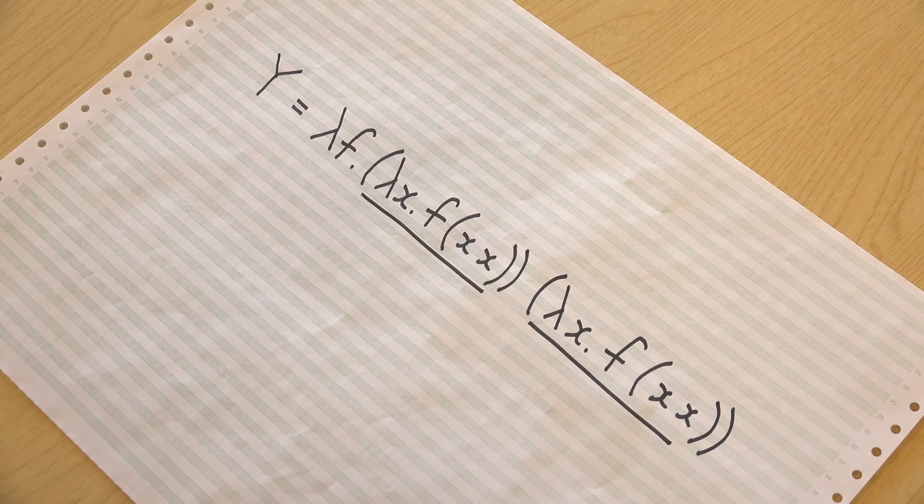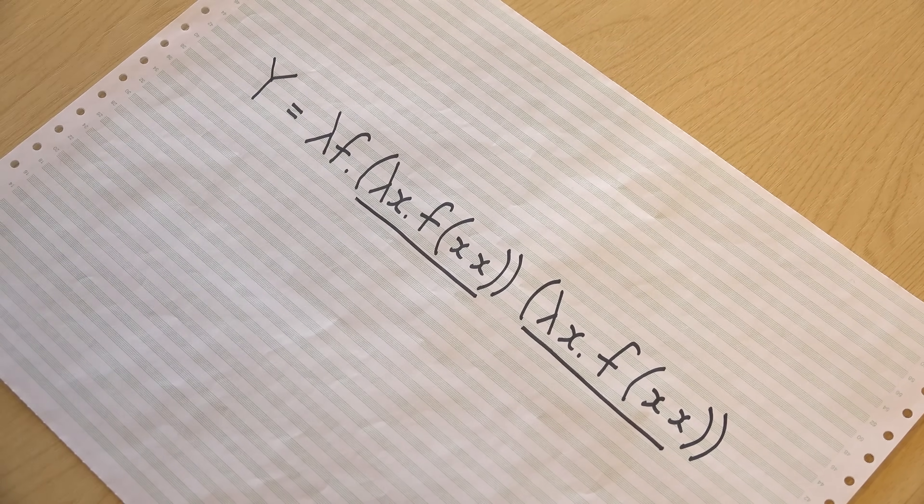There's an interesting connection I'd like to leave you with between this abstract mathematics and biology. Human DNA has a double helix structure — two copies of the same thing side by side — which is the key to allowing DNA to self-replicate. The Y combinator similarly has two copies of the same thing side by side: lambda x, f applied to x x, repeated twice. This is the key to recursion, which is related to self-replication. I don't think this is a coincidence — it's an interesting philosophical observation linking the lambda calculus to biology.